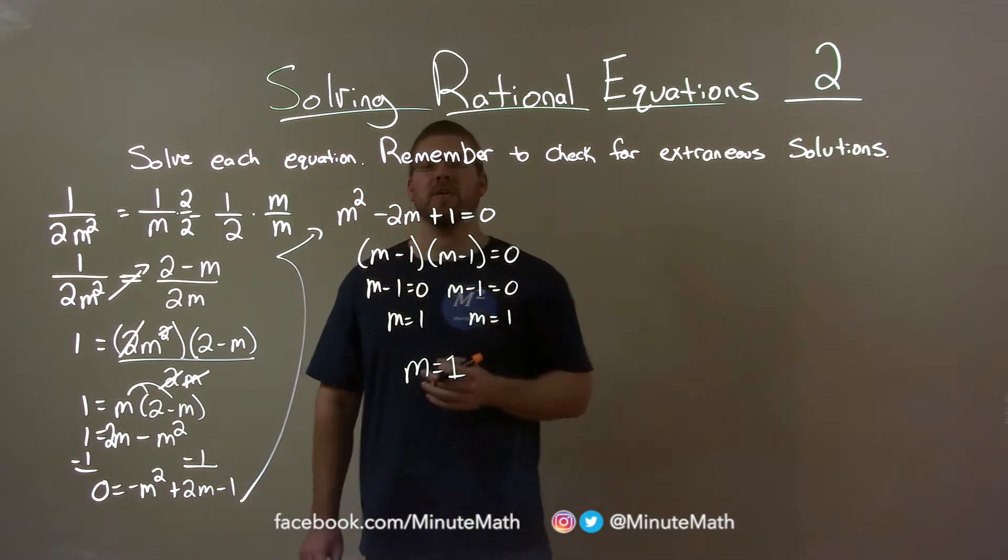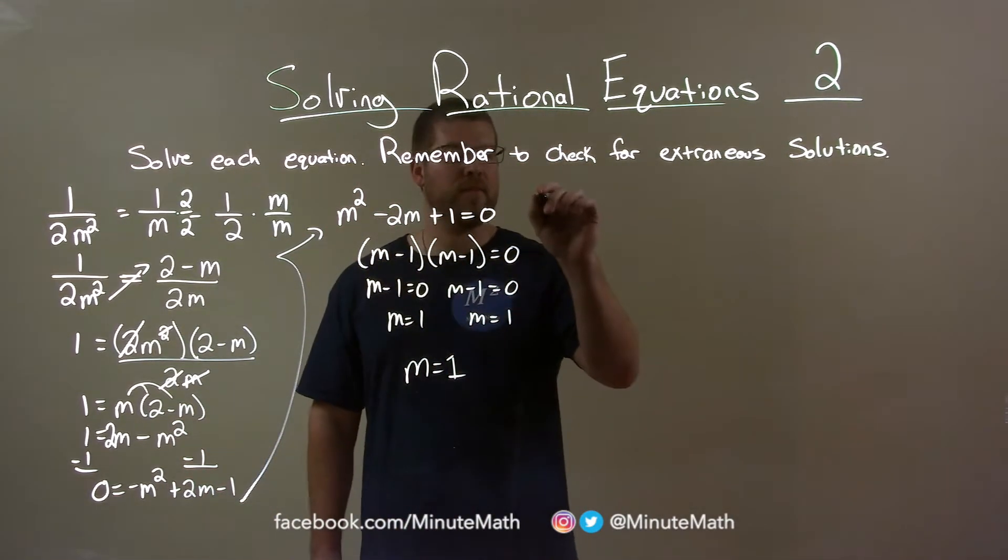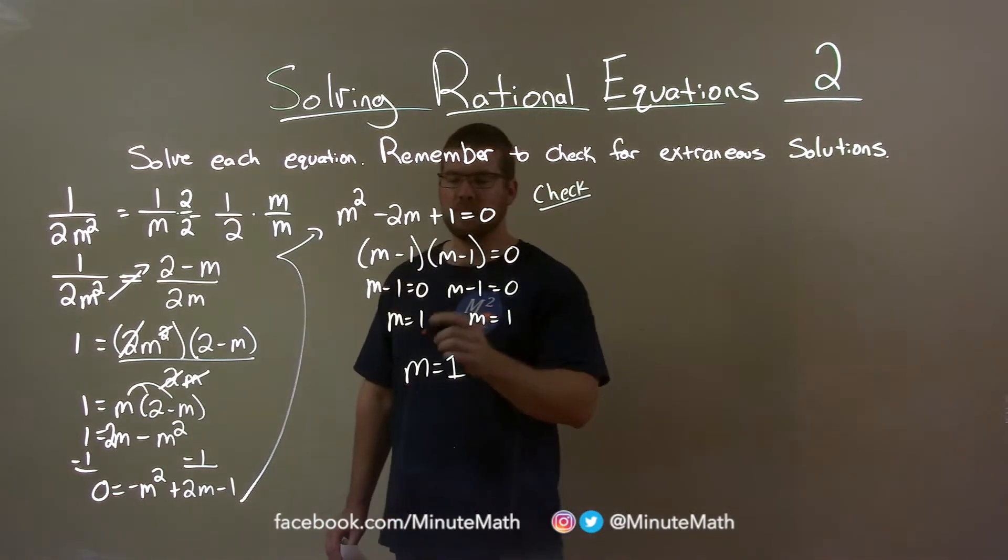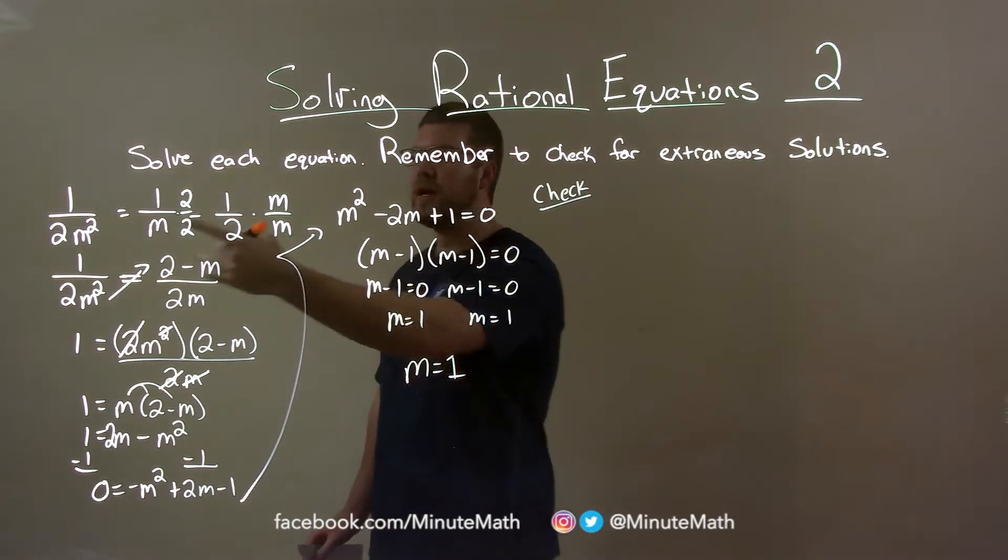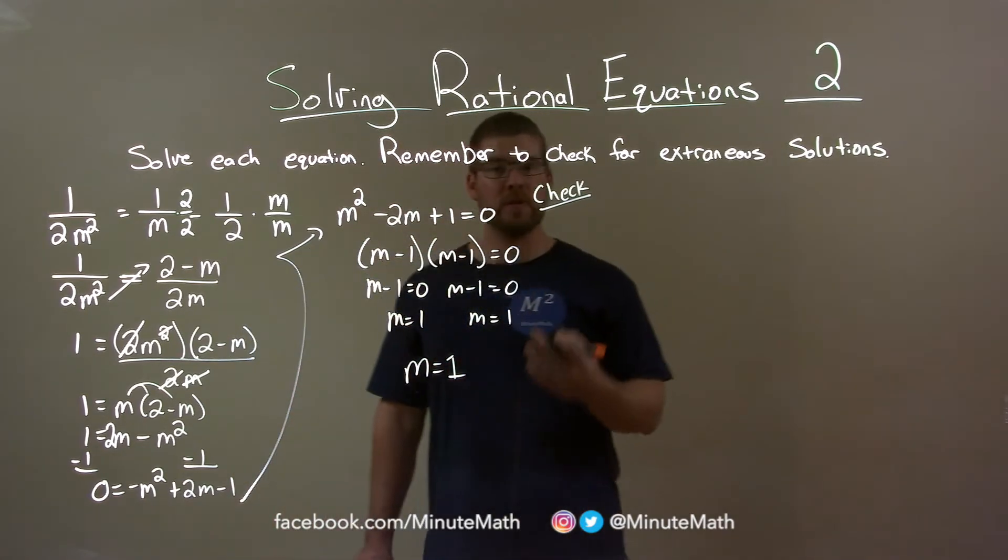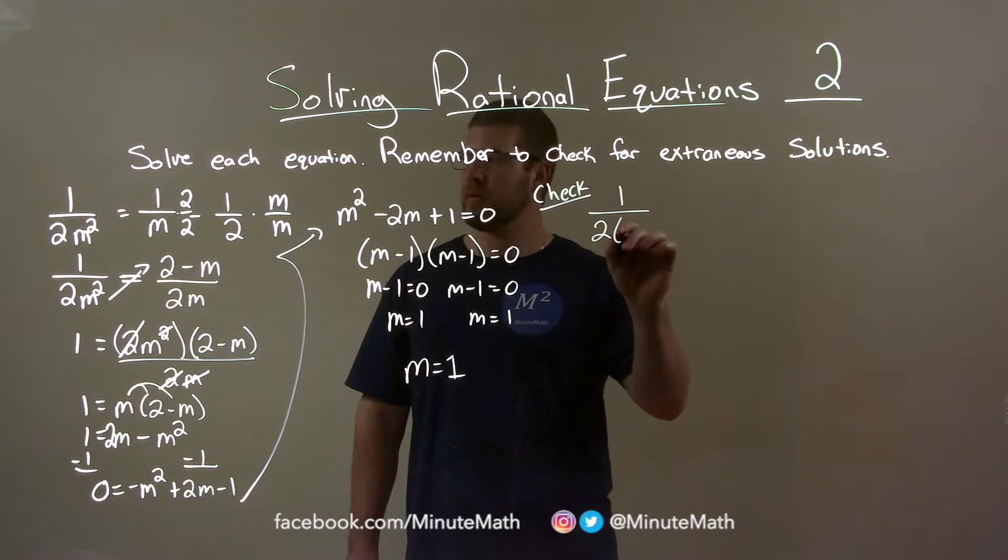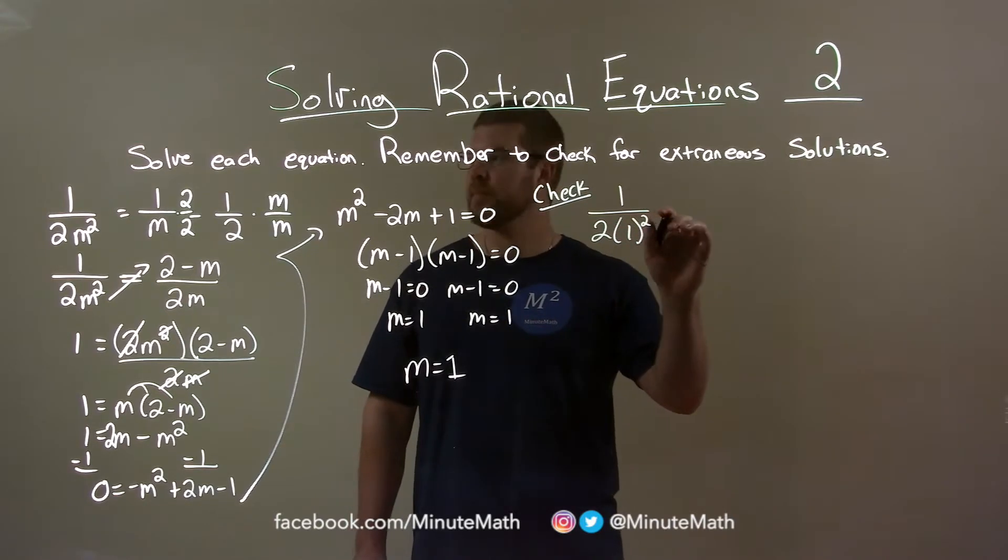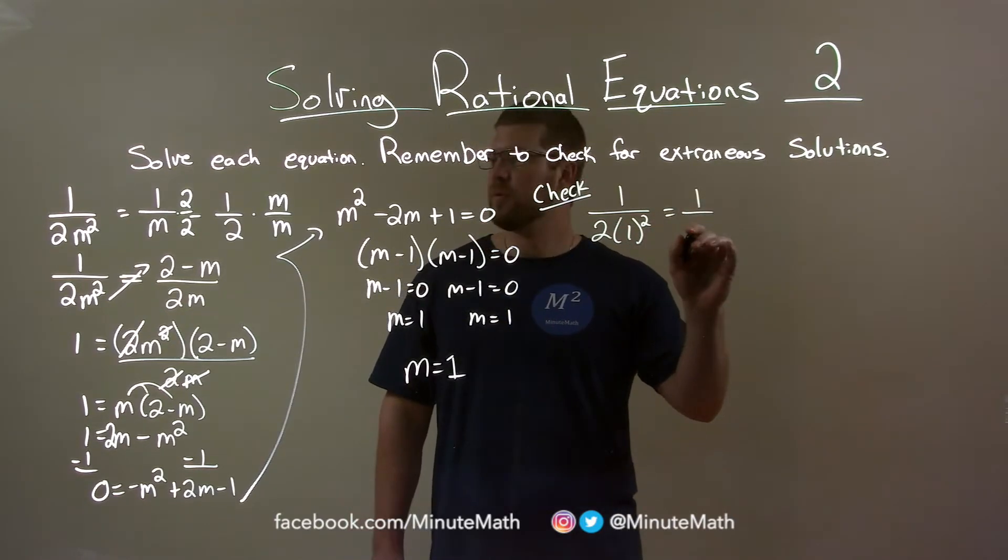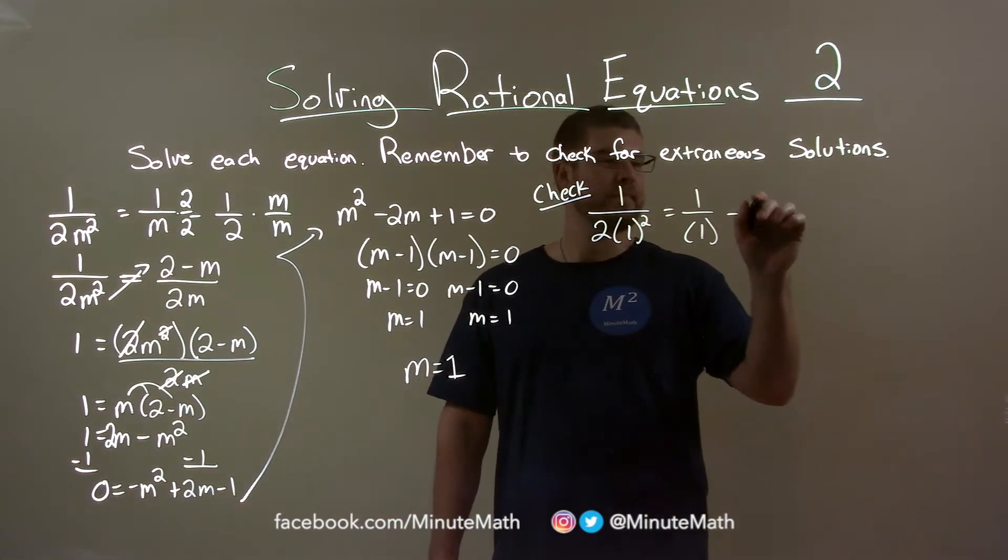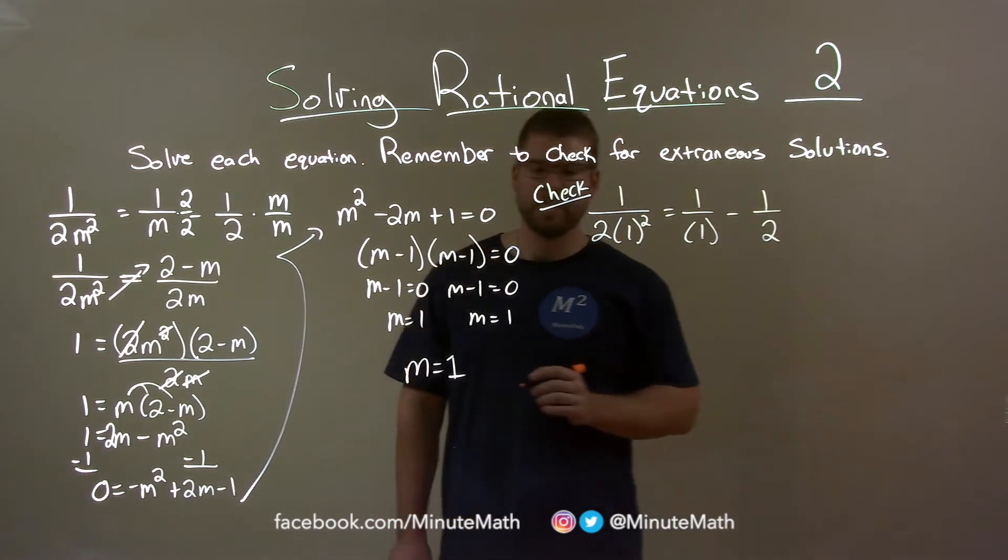They tell us here, now, we want to check our answer. Let's check it. We're going to check our extraneous solution. So we're going to put that 1 and plug it in for every single m of our original equation. So we have 1 over 2 times 1 squared equals 1 over 1 minus 1 half.